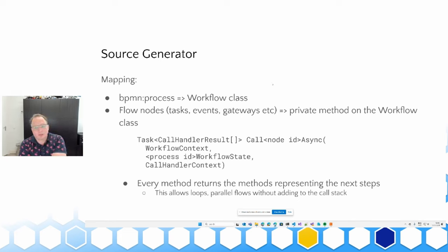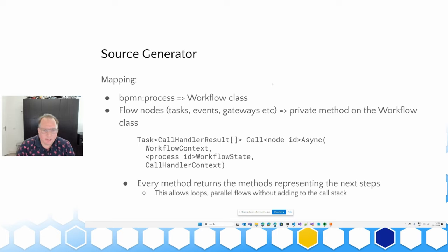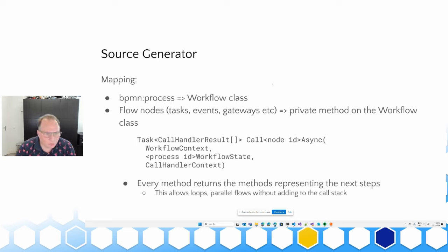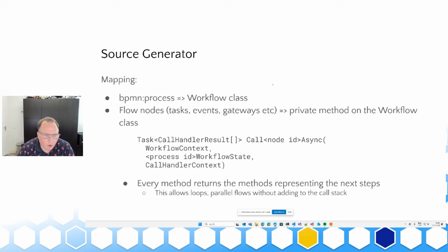Translating a BPMN diagram to code can be easy or complex depending on the constructs used. If it's a forward-only workflow — meaning it starts at the beginning and flows in one go to the end with some decisions in between and different paths — it's easily translated to code in a procedural way using if-then-else constructs. But if there are flows going back or branching off in parallel, generating code from that will be much more difficult.